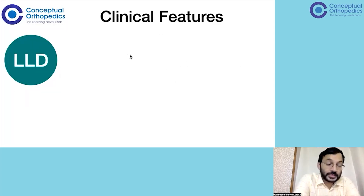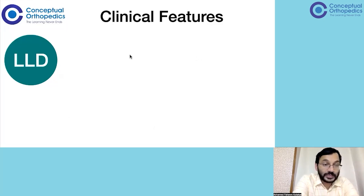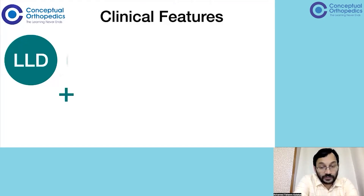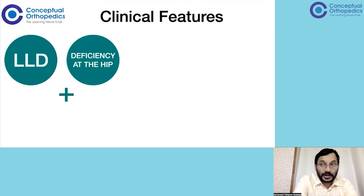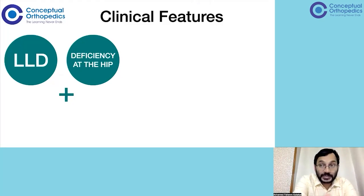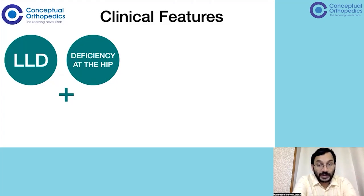Coming to the clinical features, the most important is limb length discrepancy. Along with this, we will see deficiency at the hip — both on the acetabular side and the femoral side. On the acetabular side, we might see a hypoplastic hip, a dysplastic hip, no hip at all, or a normal hip — the entire spectrum. On the femoral side, we could see a normal femoral head, a femoral head or neck in coxa vara, a femoral neck pseudoarthrosis, or a femoral head fused to the acetabulum.